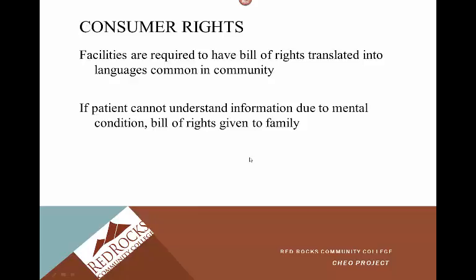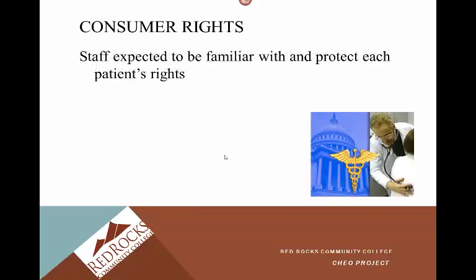If the patient cannot understand the information due to a mental condition, the bill of rights is given to the family. For example, if a patient has end-stage Alzheimer's, the family is given the bill of rights to make sure these rights are followed. The staff is expected to be familiar with and protect each patient's rights. These documents should be available in your workplace — for example, at Colorado Lutheran Home, the resident's rights are displayed as pictures placed up by the fountain room as you walk up the ramp.